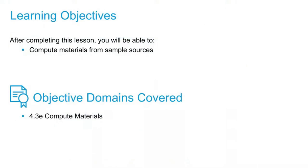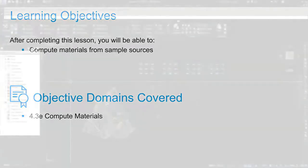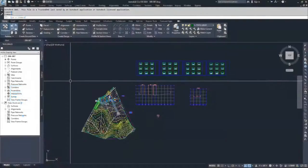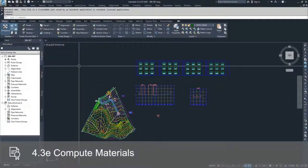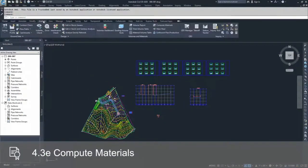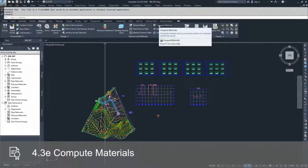In this video, we're going to take our sample lines and our section views, and we're going to start computing materials based on those sample sources. In order to do that, you're going to go to the Analyze tab and go to Compute Materials.